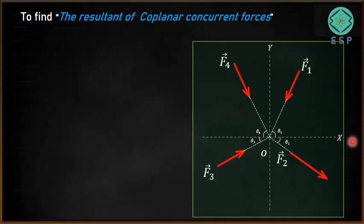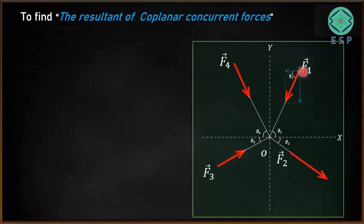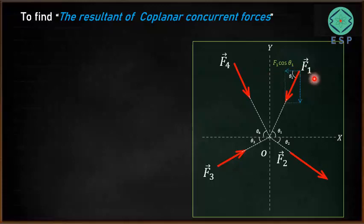Now we have to find the resultant of the system of coplanar concurrent forces. For that, we have to resolve each force along the X and Y directions. We are resolving force F1 along X and Y direction. This angle is theta 1, so this angle is also going to be theta 1. Along the X direction, the resolution of force F1 will be F1 cos theta 1. Similarly, in the Y direction it will be F1 sin theta 1.